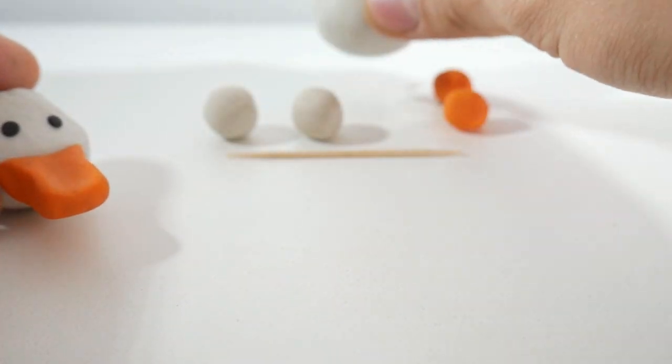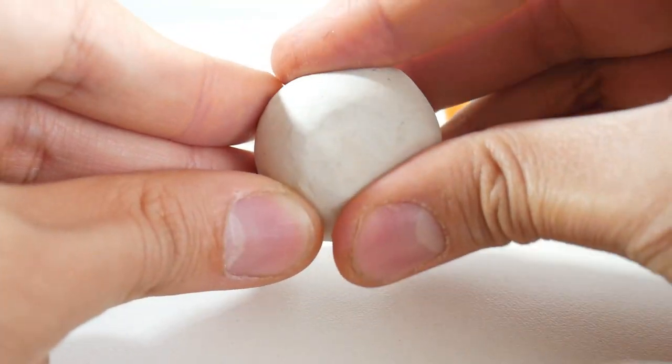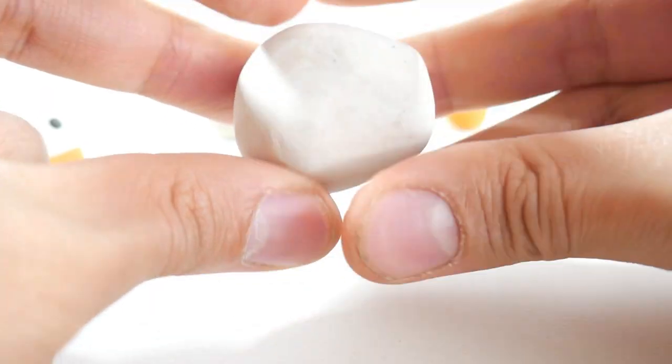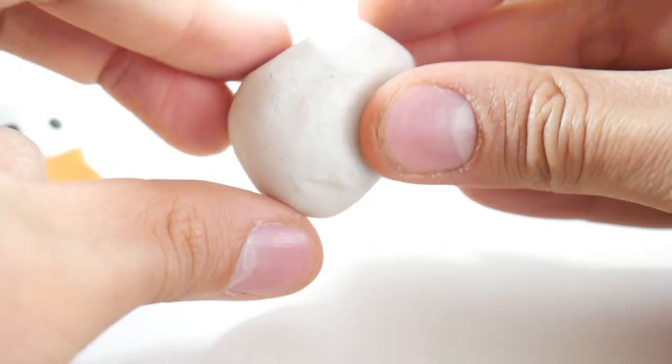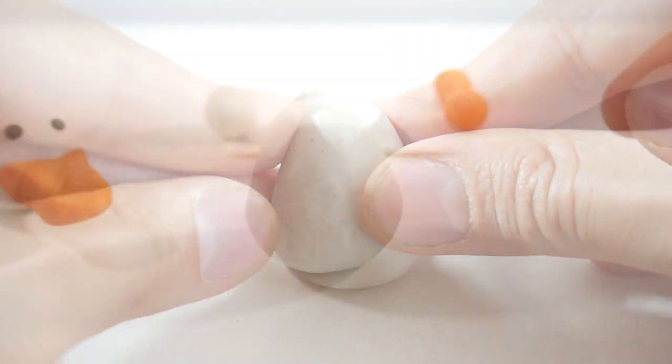Now, let's craft the body. Grab the largest ball of white clay and shape it into a pear. Just leave it there for now.